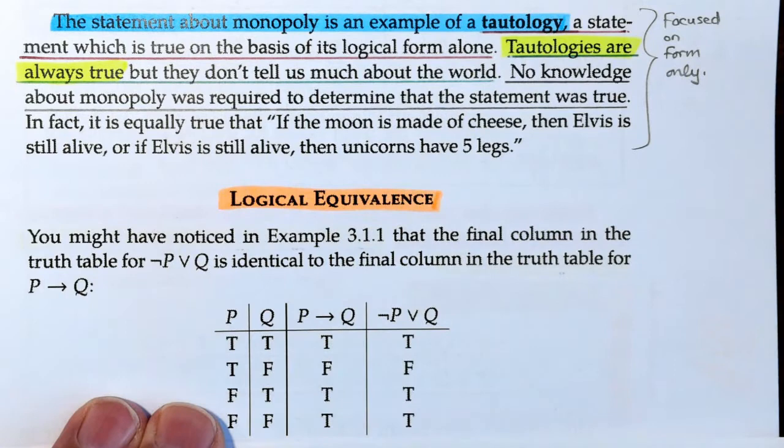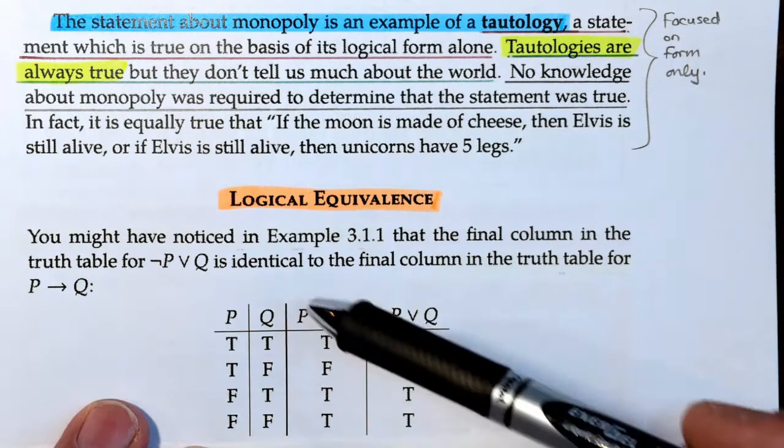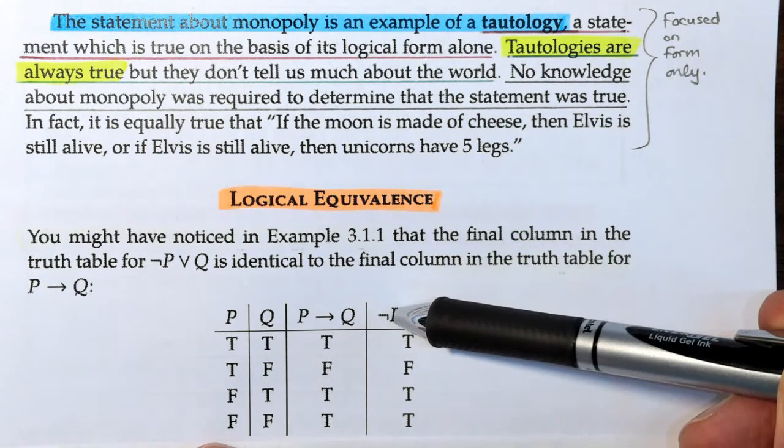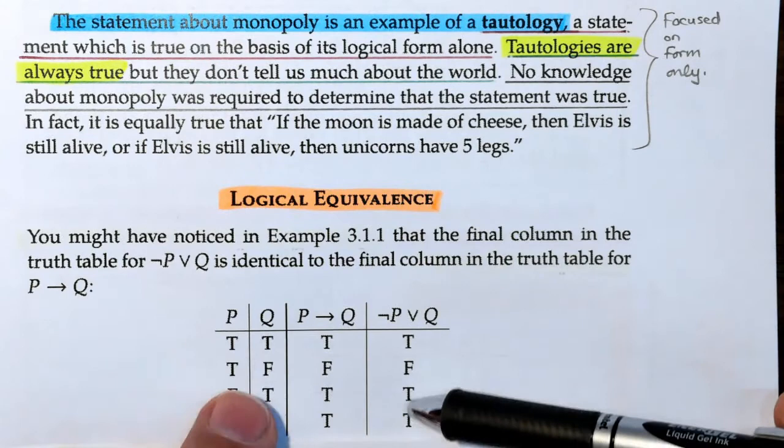Not P or Q is true when P or Q or both are true. Well, there P is true, Q is... sorry, not P is true. So we're looking at where not P is true is where P would have been false. So it's in the last two and not the first two.